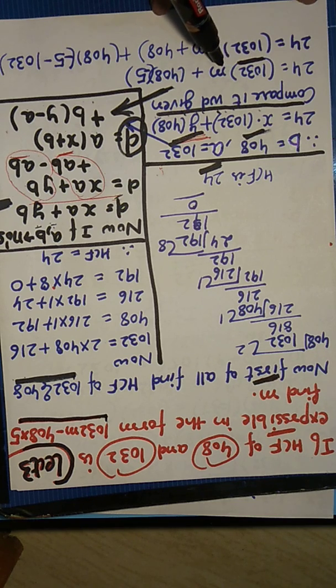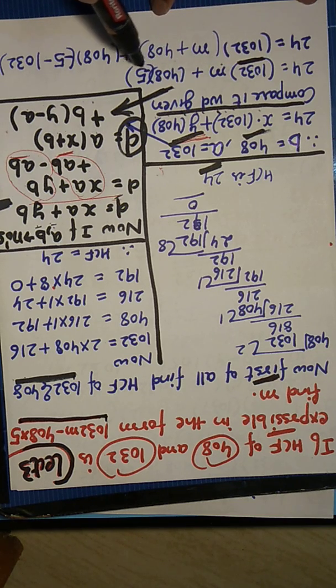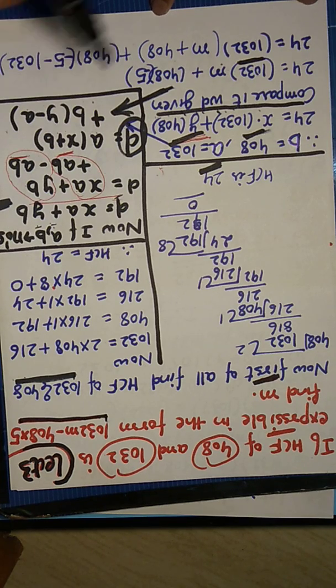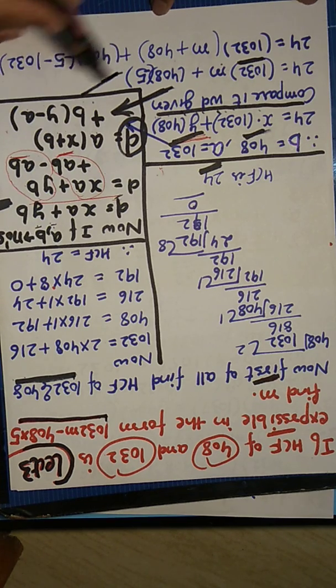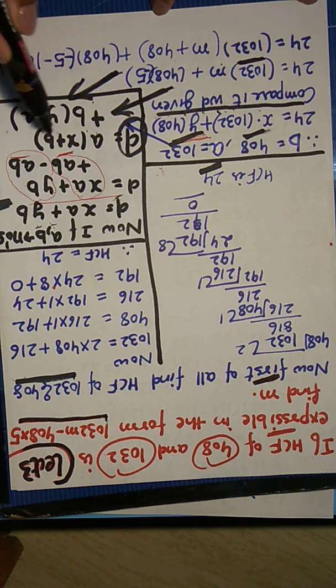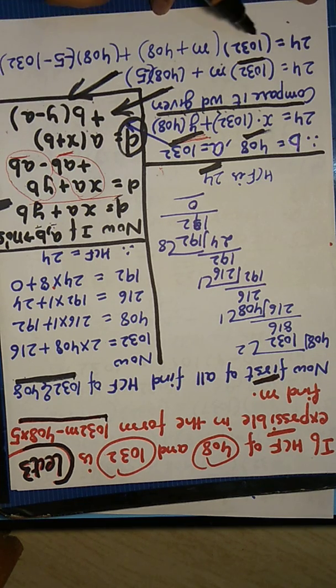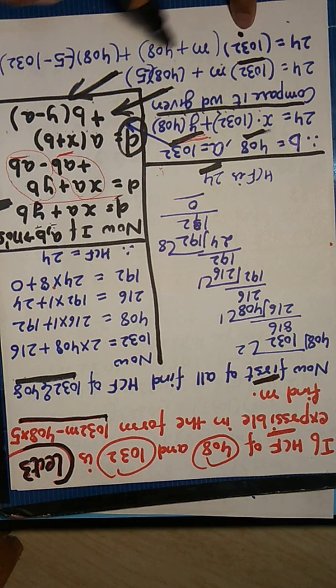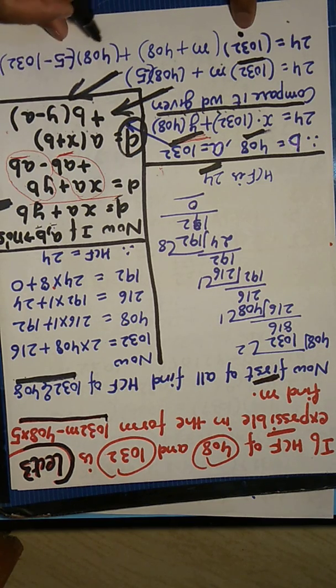Now compare this with this statement here. Compare this with this, compare 24 equals to A into, what is your A? 1032 X plus B.